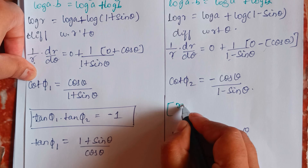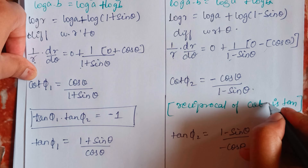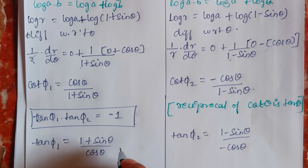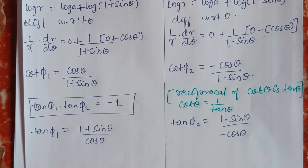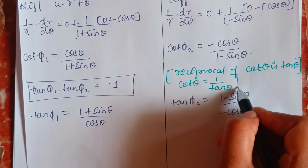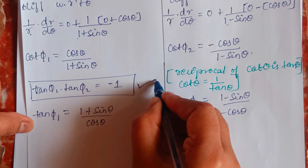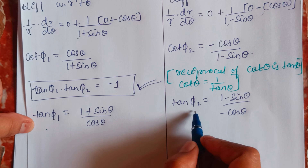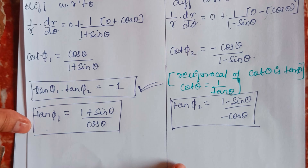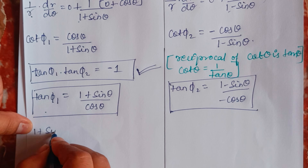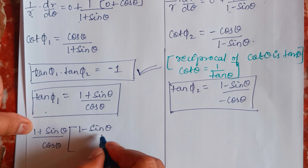Substituting: tan φ₁ · tan φ₂ = [(1 + sinθ)/cosθ] × [(1 − sinθ)/(−cosθ)]. The numerator is (1 + sinθ)(1 − sinθ), which is of the form (a + b)(a − b) = a² − b², giving 1 − sin²θ. The denominator is cosθ × (−cosθ) = −cos²θ.